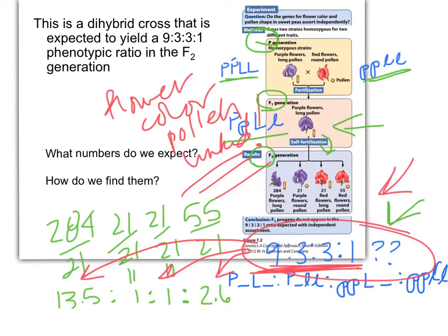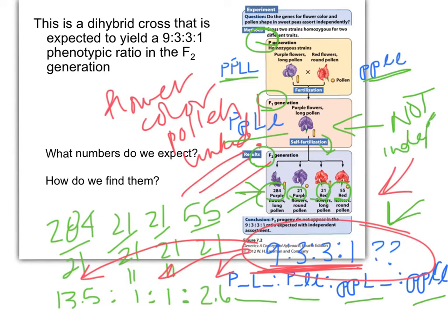If we look at these numbers and we just quickly scan it, that's not 9 to 3 to 3 to 1, right? We're supposed to get the double dominant, the single dominant, the other single dominant, and then the double recessive. If we look at these numbers, that's not that ratio. How do you find a ratio? You take each number and divide by the lowest number of the group to make the lowest number 1. If it doesn't fit 9 to 3 to 3 to 1, then it's not independent assortment — it must be linked.